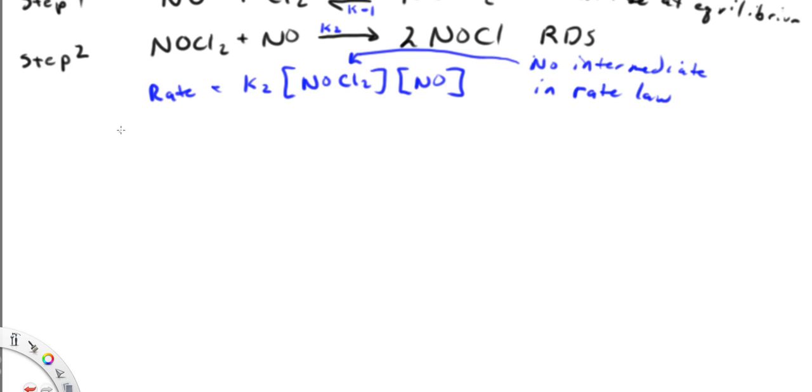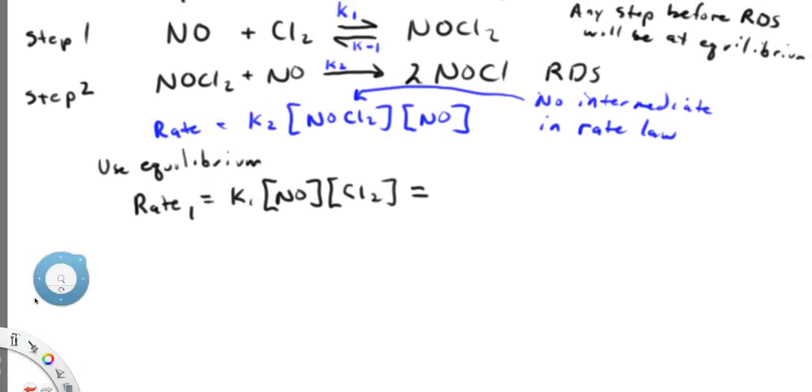And we're going to do that through substituting other species for NOCl2. In order to substitute, we're going to use the equilibrium. So I'm going to use rate of equation 1 is going to equal K1 times NO, can't see it at the top of the screen but it's there, NO times Cl2. So that's going to be rate 1.